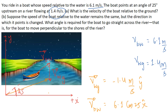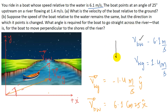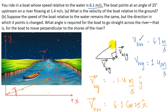Now for part B, the speed of the boat relative to water remains the same at 6.1 meters per second, but the direction theta changes. We need to find the angle theta such that the boat goes straight across the river — perpendicular to the shore. The water is still flowing with its velocity relative to ground, and the velocity of boat relative to ground must be perpendicular to that flow, at 90 degrees.